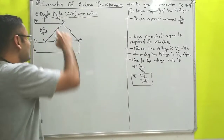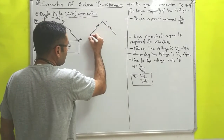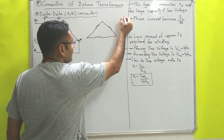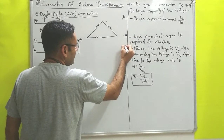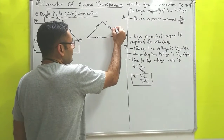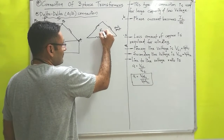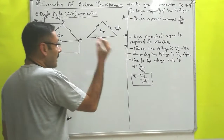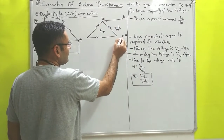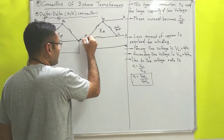Similarly, on the secondary side which is also delta connected, I will draw a three-phase delta connection. Again we will consider three terminals: terminal B, terminal C, and terminal A. These three terminals are connected with the load, so with the help of these three terminals we will get the output EMF from the secondary winding, supposed as ES. We will take line conductors BB, CC, and AA connected to the respective terminals.